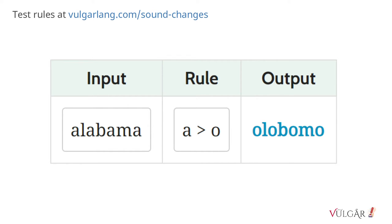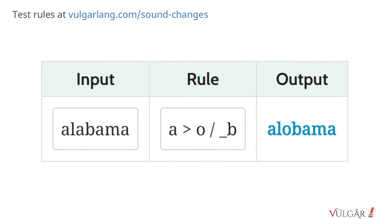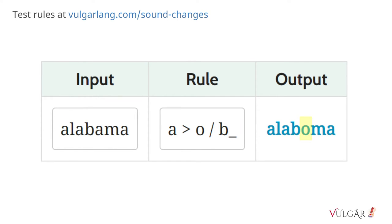A basic rule such as this changes all A's to O. You can also specify if the change should only happen in a particular environment. The forward slash means in the environment of, and the underscore signifies where the A is. This rule changes an A to O when it comes before a B, whereas this rule changes it after a B.